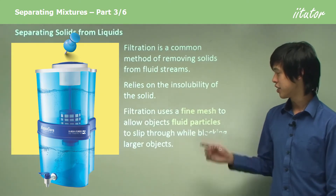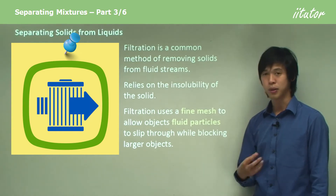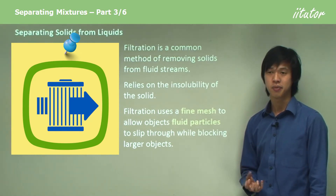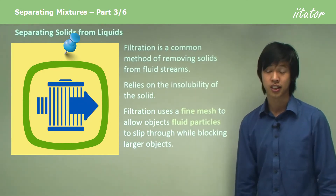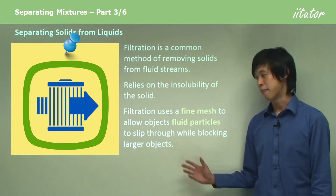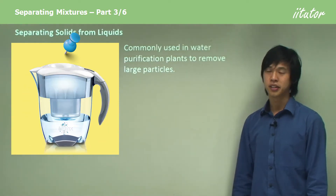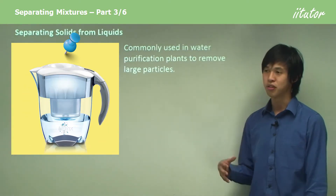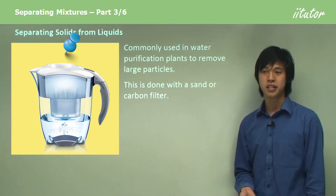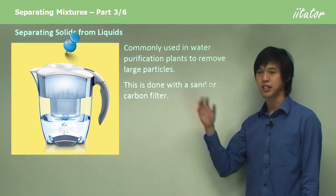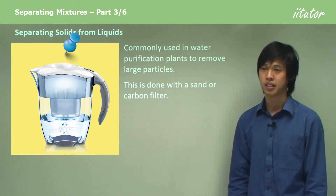Filtration uses a fine mesh to allow fluid particles to slip through while blocking the large solid particles. You've seen water filters and pool filters — that's basically how they work. This process is commonly used in water purification to remove large particles from the water stream, often using sand or carbon as a filter. These work very well and can even remove some bacteria.